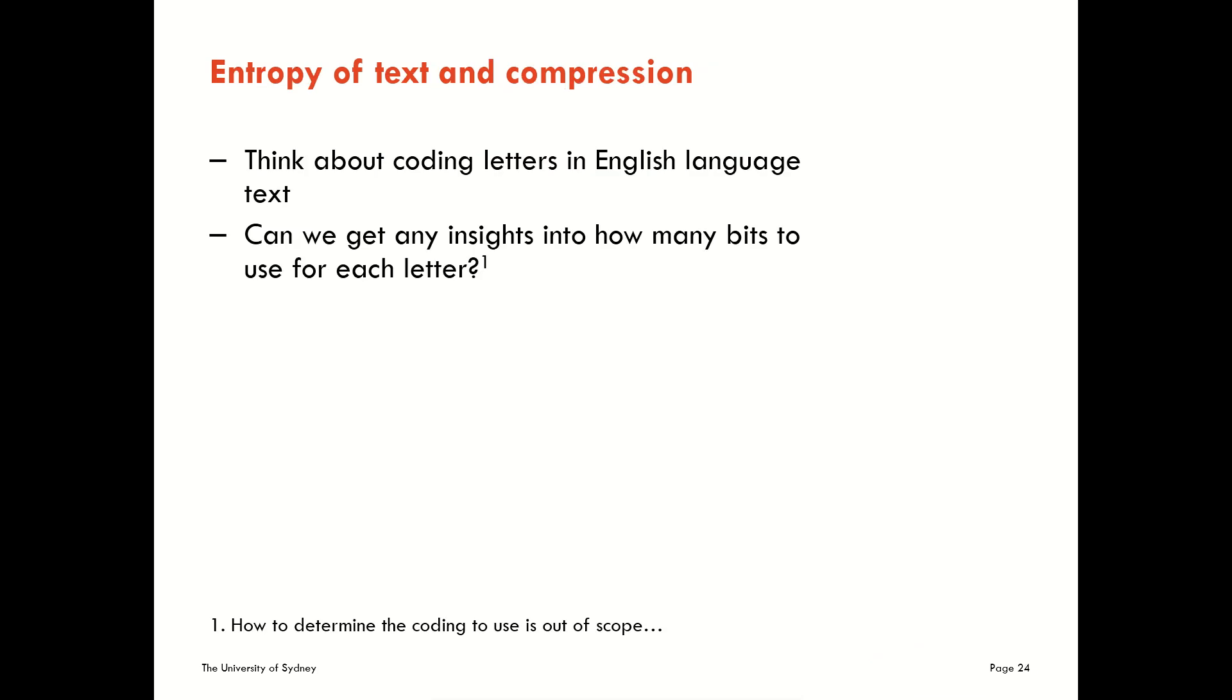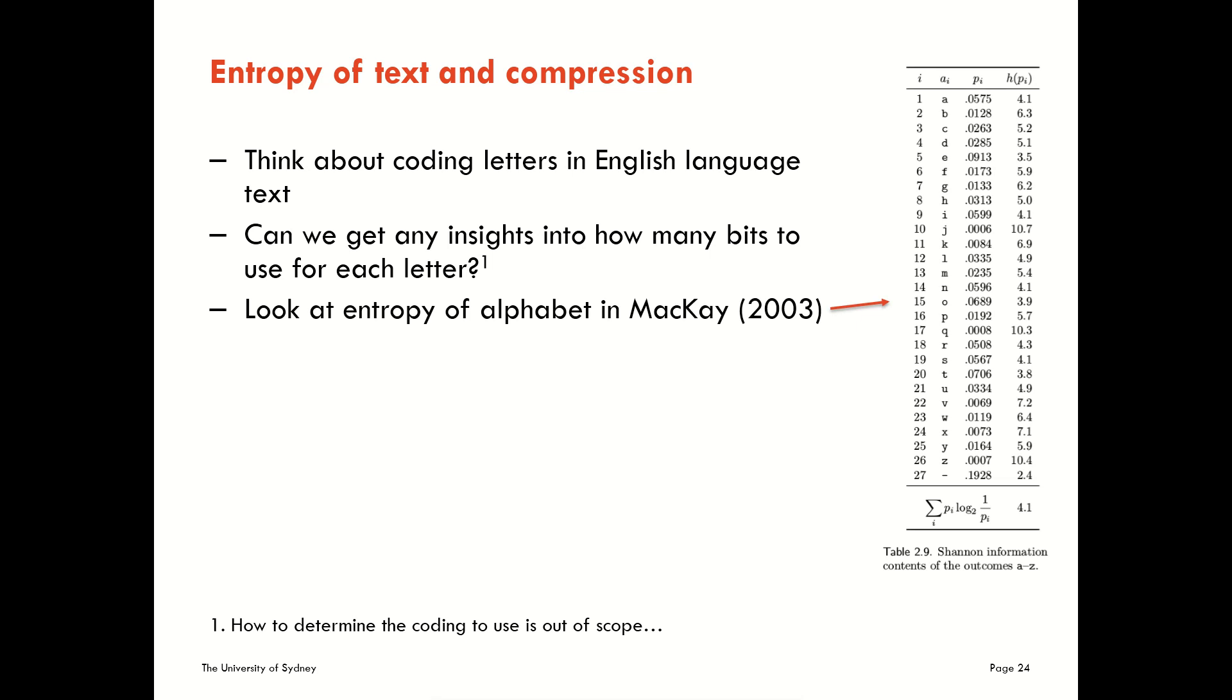Let's have a look at one more example here, which is thinking about encoding letters in English language text. So we ask the question, can we get any insight into how many bits to use for each letter? Now, I've put a footnote here to say determining the coding is effectively out of scope for us. I've just told you a little bit about that with Huffman code, but that's as far as we'll go on that. But let's see, can we get any insights on how many bits to use for each letter? For this, we can turn to table 2.9 in MacKay, where he lists for all the letters of the alphabet and including a space, what the probabilities of those symbols are in some sample text.